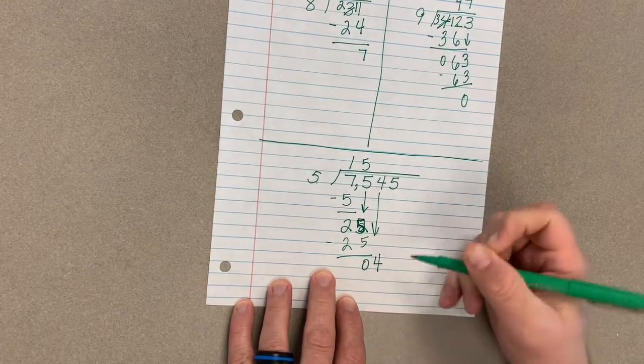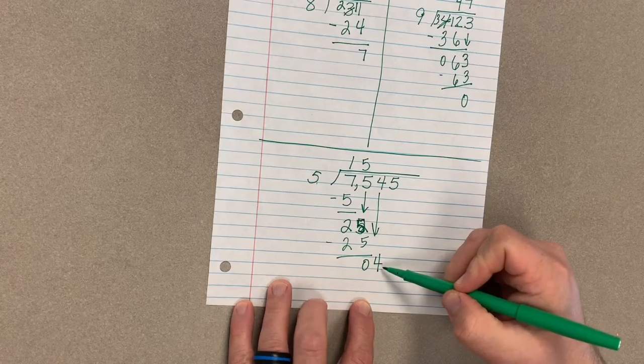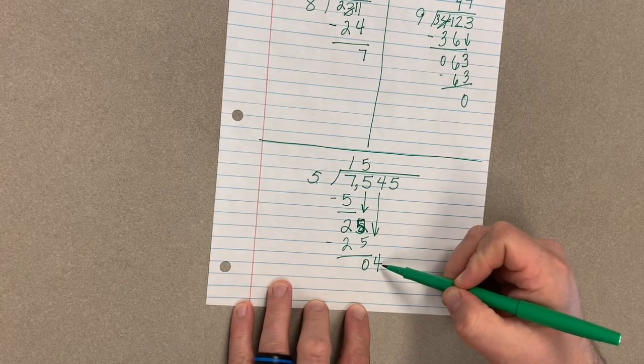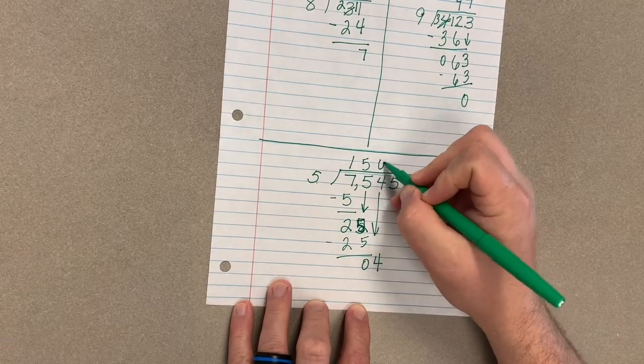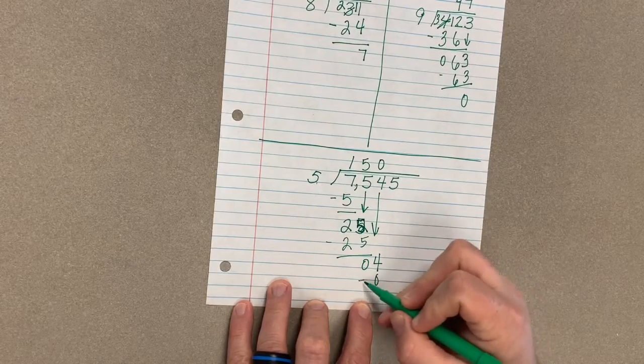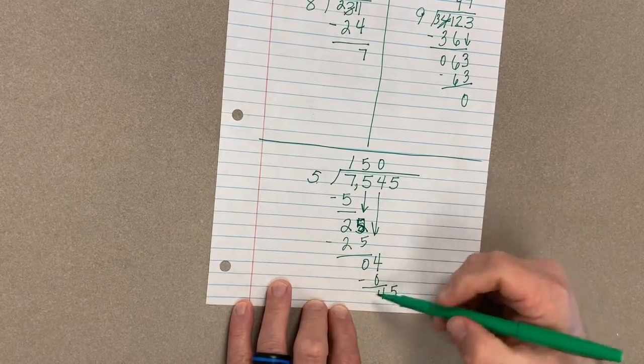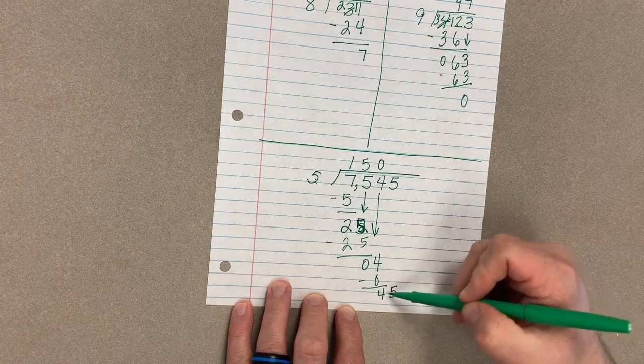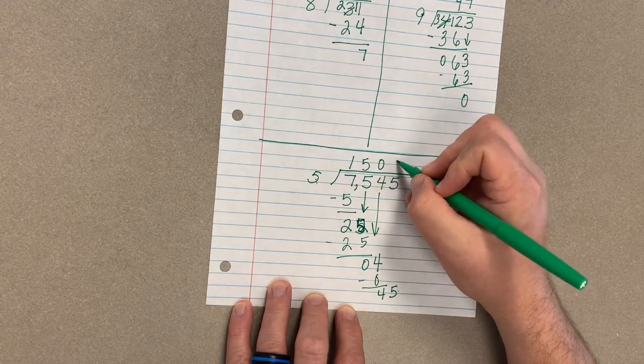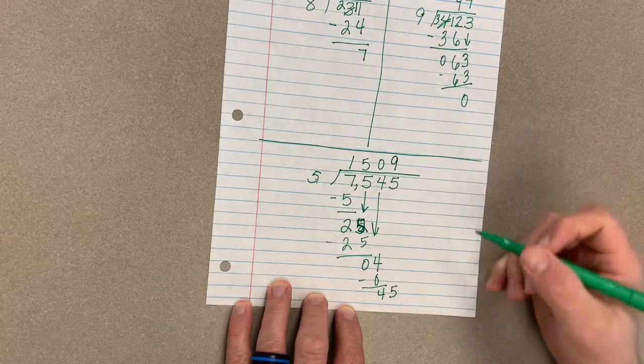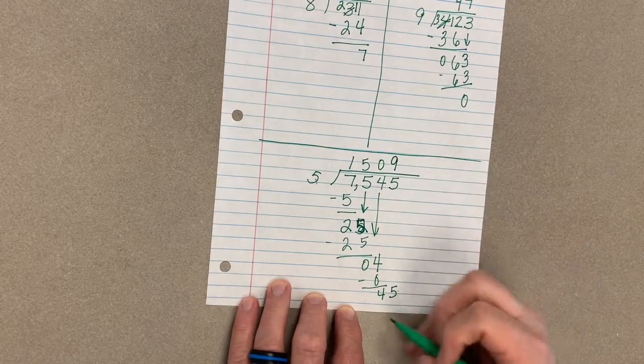Drop our 4 down. Now 5 cannot go into 4 equally any times because 4 is too small, so we have to drop a 0 there to hold our place. But that 4 is going to drop down when we do our subtraction, we're going to keep it there. Now 5 can go into 45, and I happen to know from my 5 facts, or counting by 5s, that 5 times 9 will give me 45.